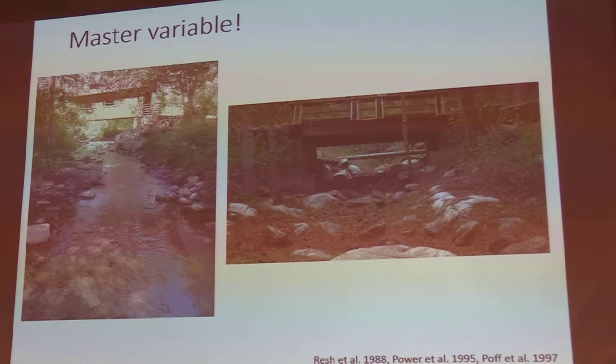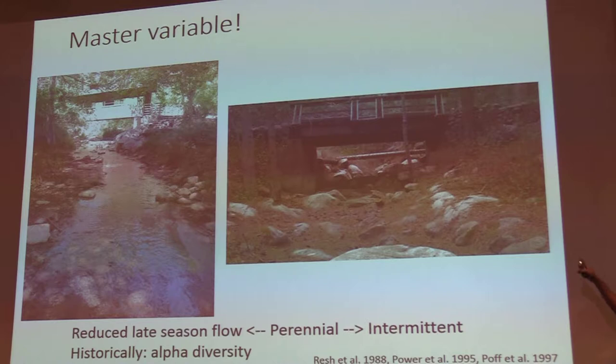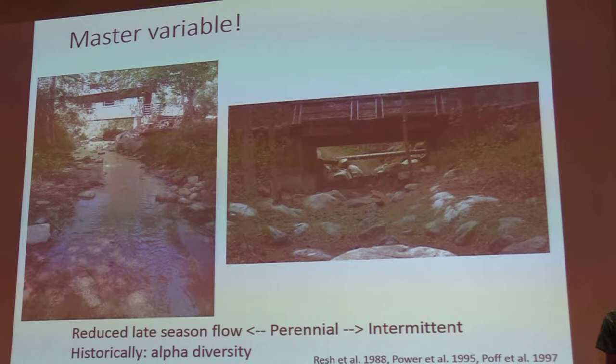Flow has been considered a master variable for several decades and it's the centerpiece of my research. I'm really interested in the shift of flow regimes and how that influences communities. The picture on the left is Strawberry Creek in the San Bernardino Mountains about nine years ago; on the right is Strawberry Creek three years ago, same time of year — illustrating the radical shifts we're seeing in historically perennial streams.